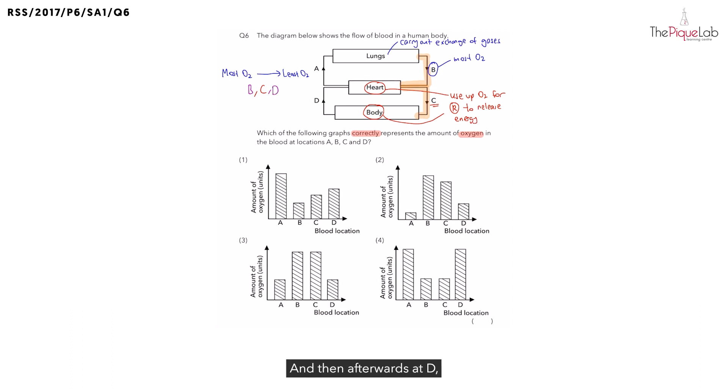And then afterwards at D, where's the blood going to? We can see the blood flows to the heart. And remember, the heart is a muscle. Does it also use up oxygen? Yes. So if it uses up oxygen, that means the blood flowing from the heart to the lungs at A, would it have more or less oxygen? It would have less oxygen than D. In fact, out of the four locations, A would have the least amount of oxygen.